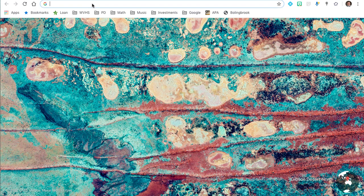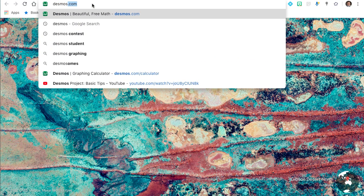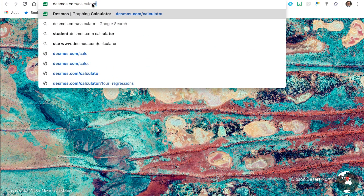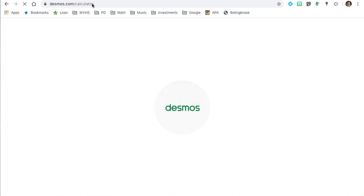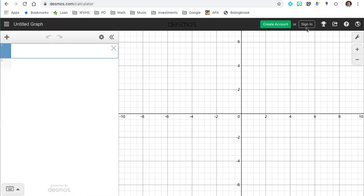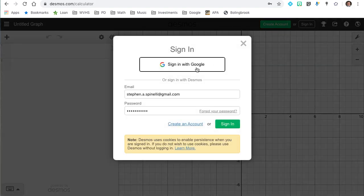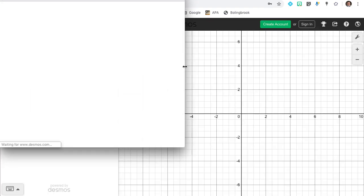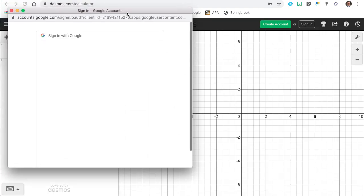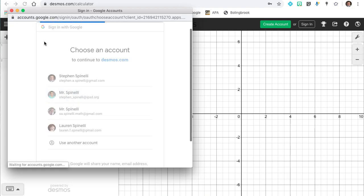First thing you're going to want to do is open up a new tab and go to Desmos.com slash calculator. Once that loads, the first thing you should do there is be sure that you are signed in. If you sign in through single sign-on first, you're going to want to click the sign-in with Google and you will choose your school account.